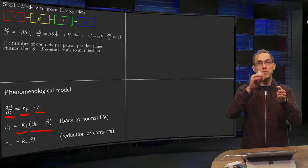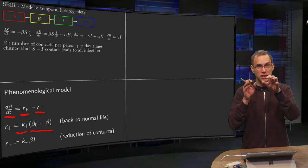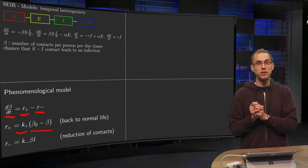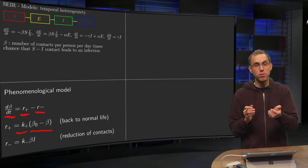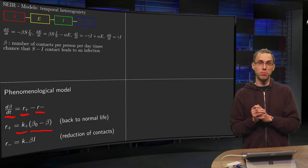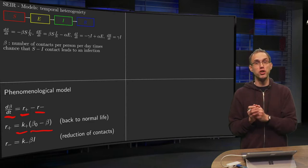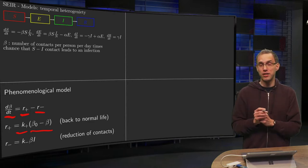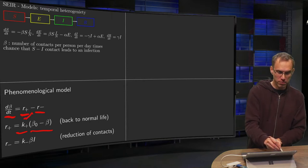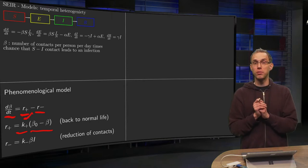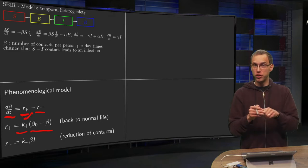What is r plus doing? As soon as beta is below normal, β₀ - β becomes positive, r plus is positive, and dβ/dt is positive. Then the number of contacts is growing, and the rate at which it grows back is modeled by k+. Under normal circumstances, r plus is zero.